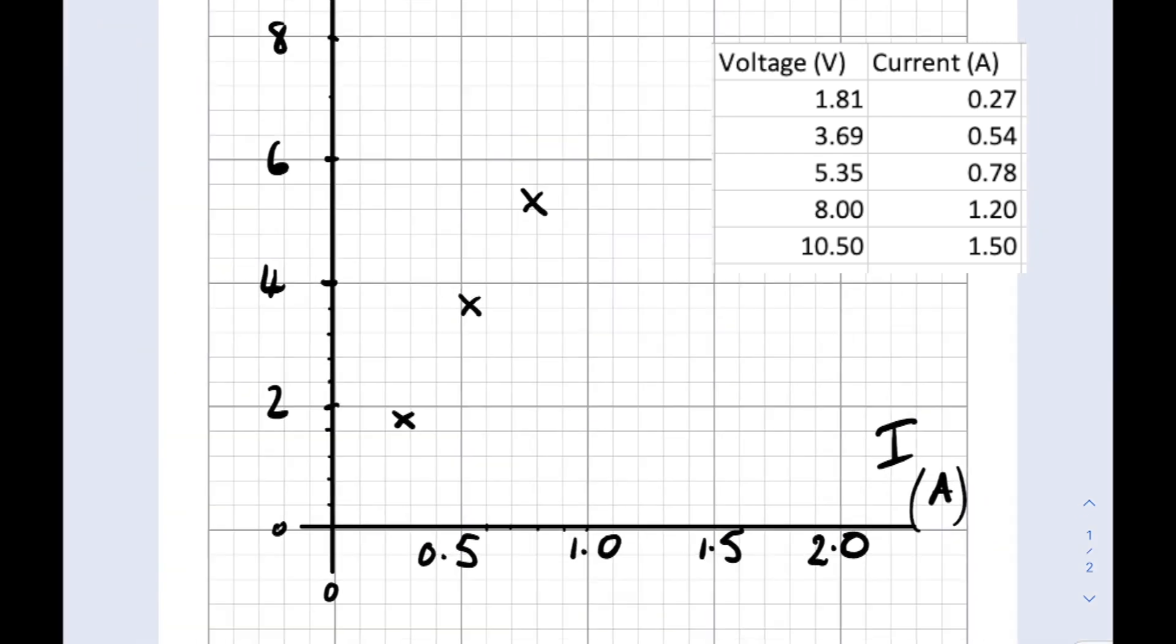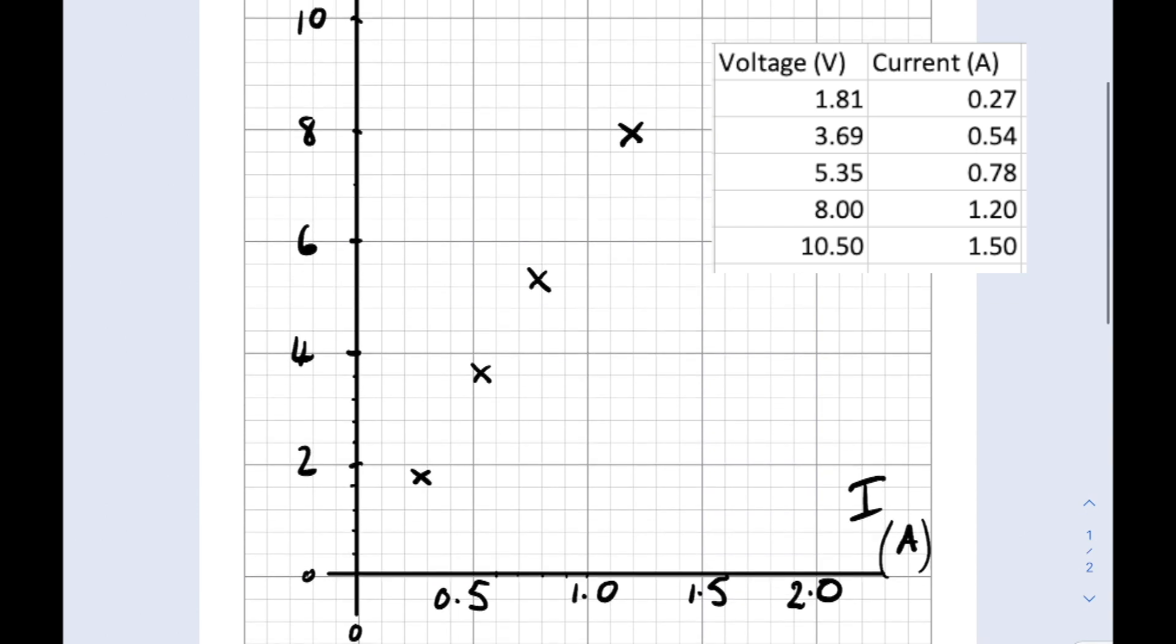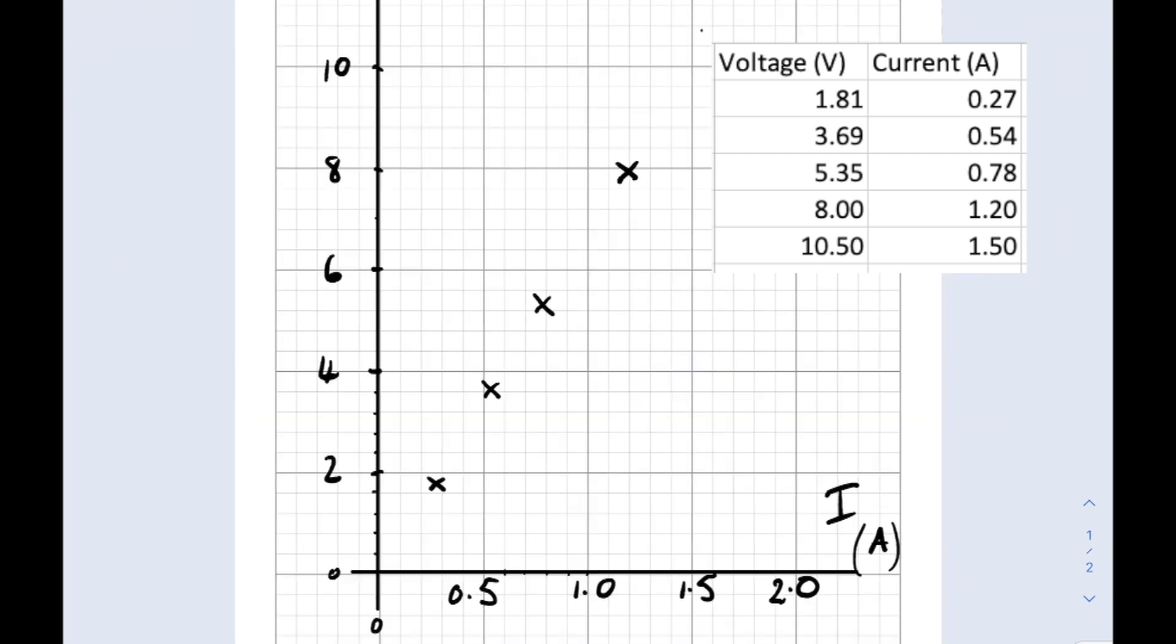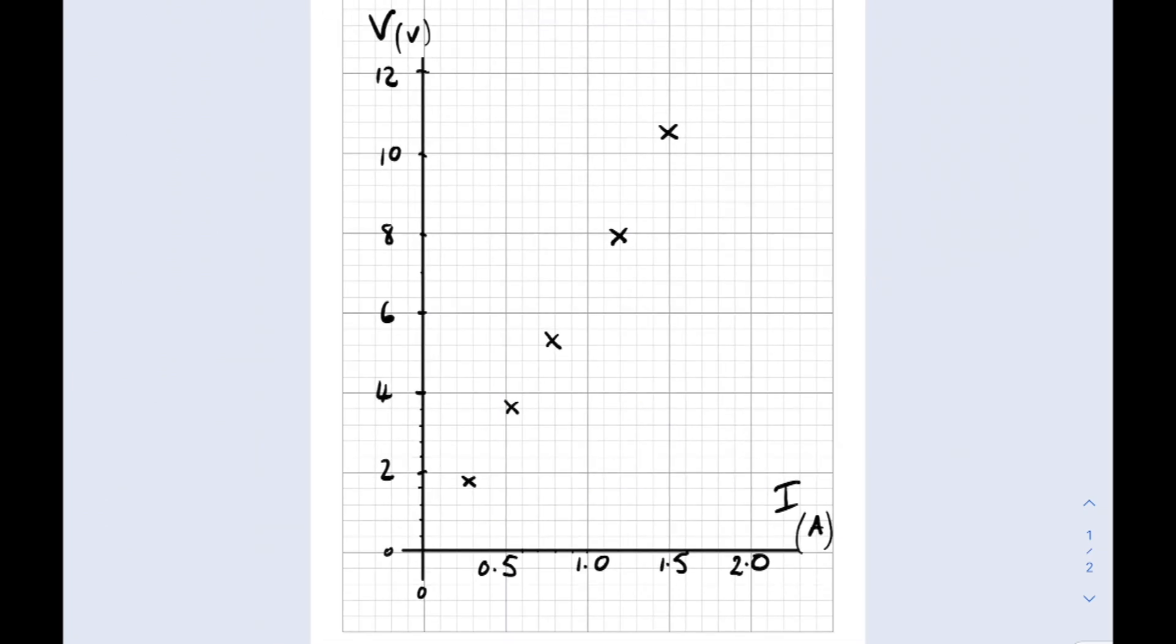Next one, 5.35 and 0.78. I reckon that's about there. Then 8 and 1.2. That's a bit easier to plot. And the last one is 10.5 and 1.5. Right. Make it up a wee bit higher. Then, once you've got all your points on your graph, it's just a case of drawing a best fit straight line or a curve. Don't do a jaggy dot to dot kind of graph. A best fit straight line or a best fit curve. And make sure you use a ruler.